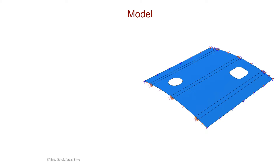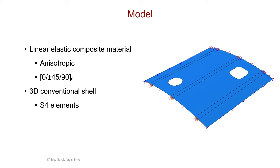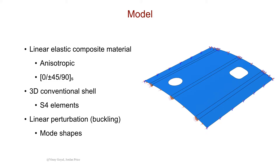Carrying out this analysis in Abacus will require creating a composite laminate with anisotropic material properties. We'll be using a zero, plus or minus 45, 90 degree symmetric layup, giving us a total of eight plies. We'll do a 3D conventional shell analysis using S4 elements, and the ultimate goal is to determine the buckling mode shapes and their corresponding eigenvalues.